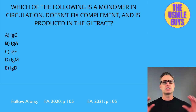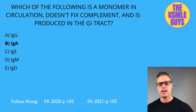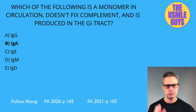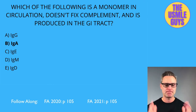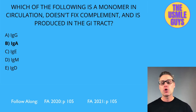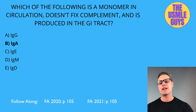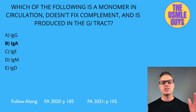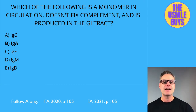If the question asks for the most abundantly produced immunoglobulin — IgA. But if they ask which is most abundant in the serum — IgG. IgE binds basophils and mast cells, cross-linking when exposed to an allergen. It mediates type 1 hypersensitivity reactions by releasing inflammatory mediators, primarily histamine. In parasitic infections, IgE is the most abundant immunoglobulin, protecting via activation of eosinophils.